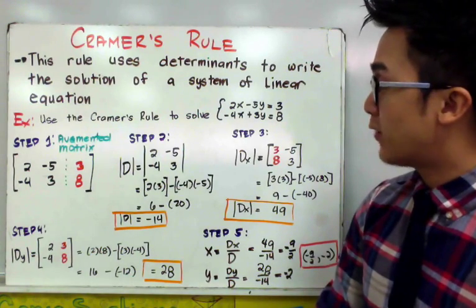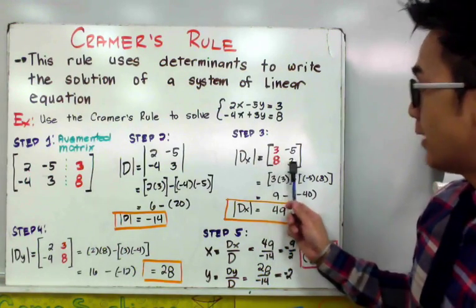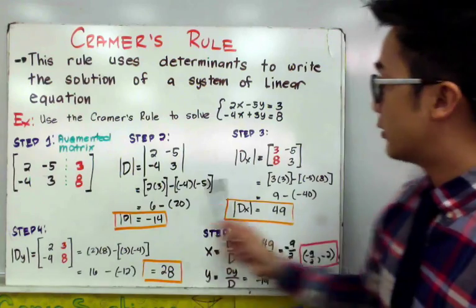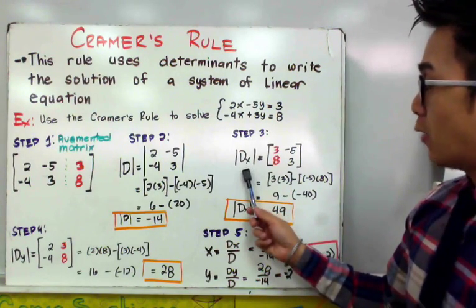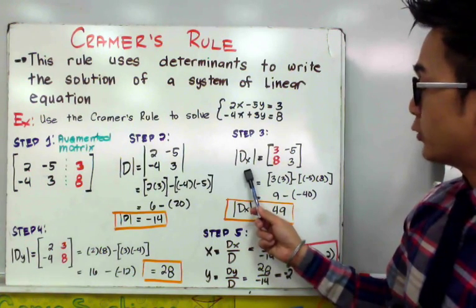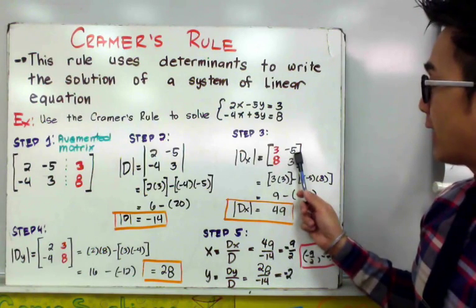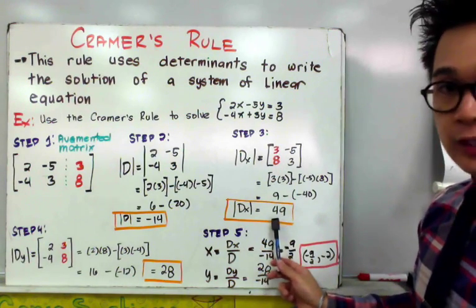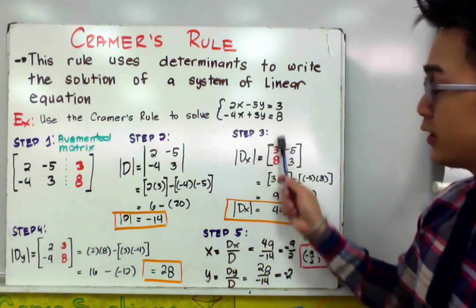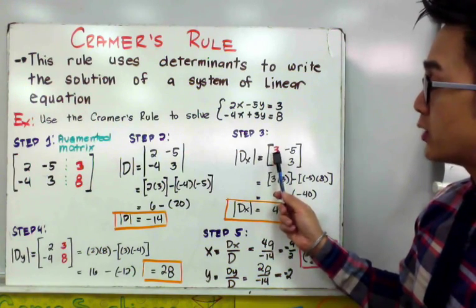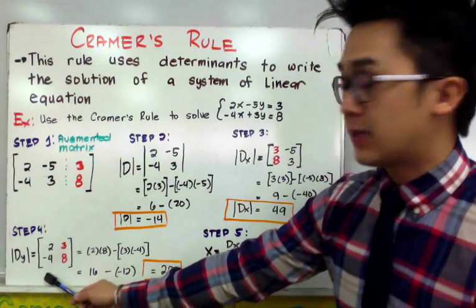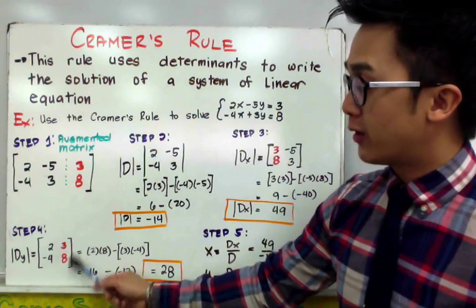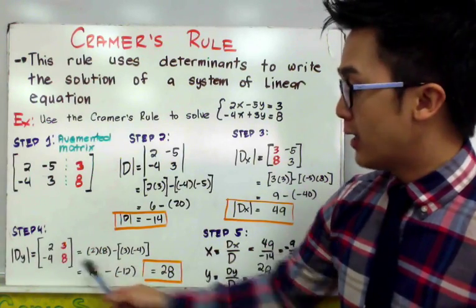For our second matrix to find the value of x, we use the coefficient matrix but change the x column into the right-hand side. So Dx is equal to 3, 8, negative 5, and 3 — we replaced the first column with the right-hand side values. Using the determinant rule, Dx equals 49. Similarly, to find y, we change the second column by the right-hand side, so Dy is now 2, negative 4, 3, and 8, giving us a determinant of 28.